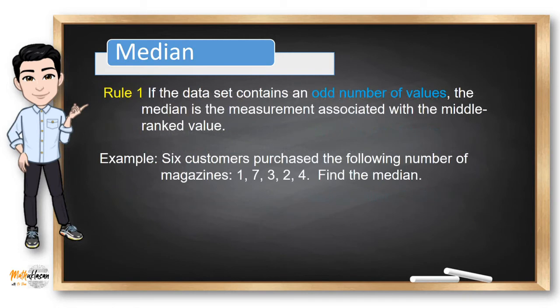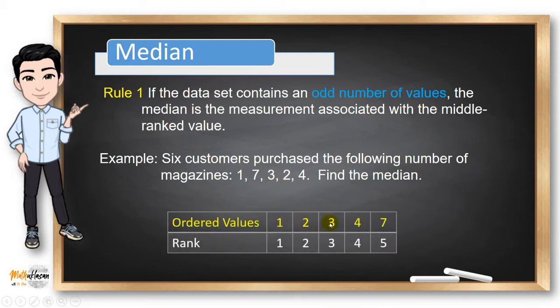How about I just give you an example. Six customers purchased the following number of magazines. Find the median for this data set. The first thing that we need to do is to order this data set. So if we have this order, we can now identify the number of values that we have. In this example, we have five data values.